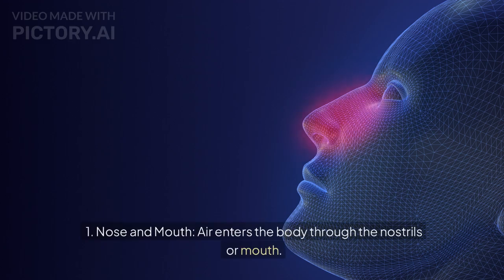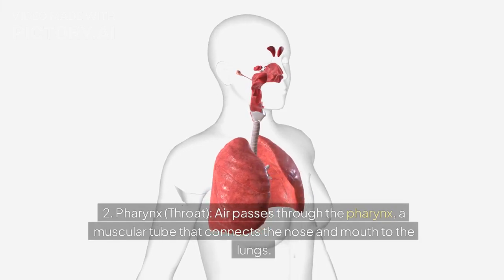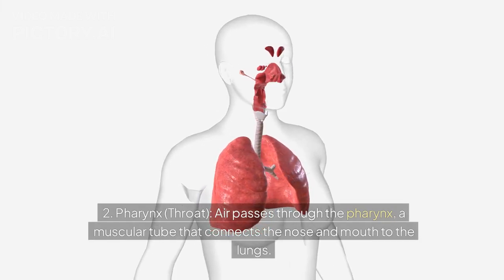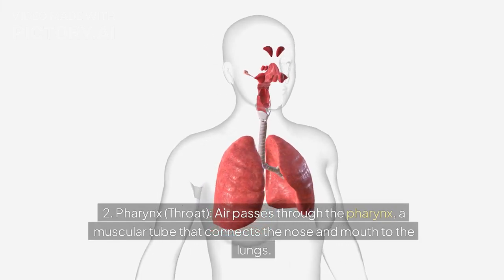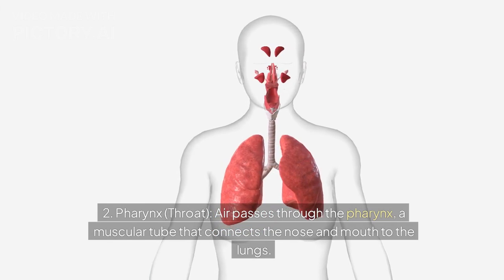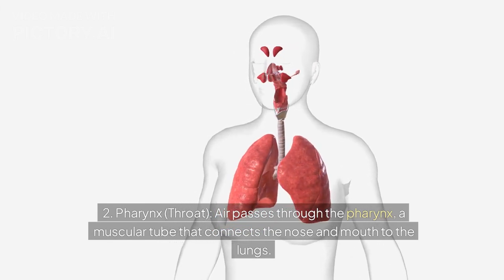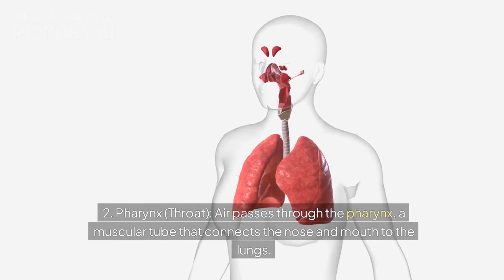1. Nose and mouth — air enters the body through the nostrils or mouth. 2. Pharynx (throat) — air passes through the pharynx, a muscular tube that connects the nose and mouth to the lungs.